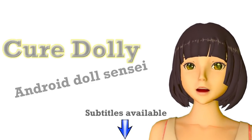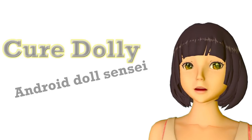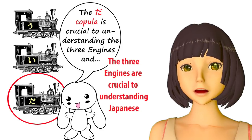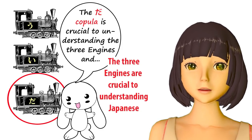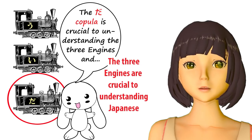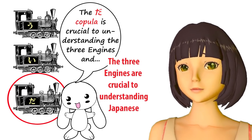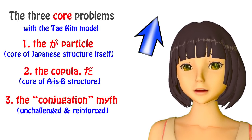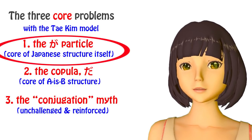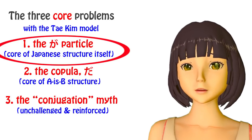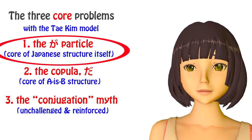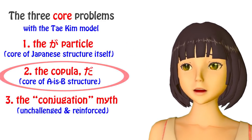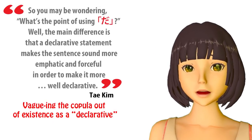Today we're going to talk about the core of Japanese structure, and we're going to look at it from a different angle by contrasting it to something different from what we normally contrast it to — what Taikim-sensei does with it. Last week we looked at what Taikim-sensei does with the ga-particle, which is the absolute core and center of every logical Japanese sentence. Today we're going to look at what he does with da, and in a way this is parallel to what he does with ga.